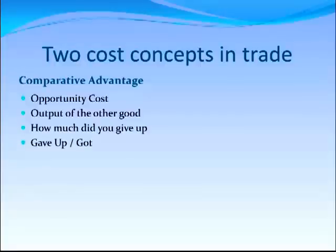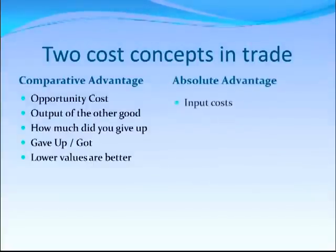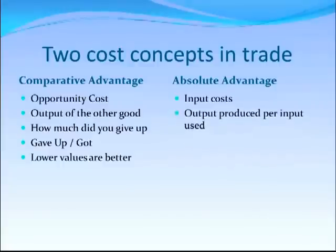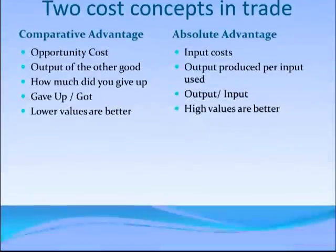The measure is how much you gave up divided by how much you got, and lower values of this are better. Absolute advantage, though, is based on input costs — it is the amount of output you got for each input you used during production, so it's output divided by input, and higher values are better.